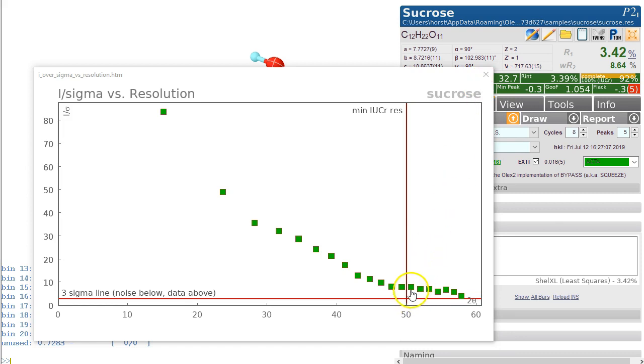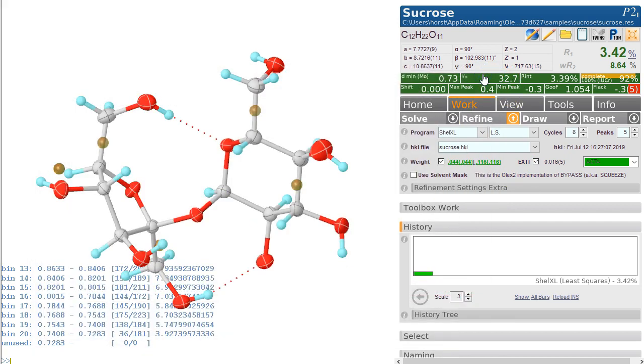I think it's worth including all the data all the way out here because it's above the three sigma line. So we're looking good. Thanks for using Olex2.